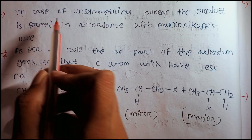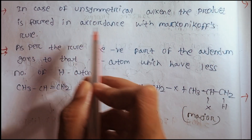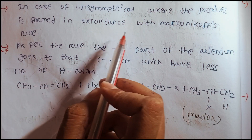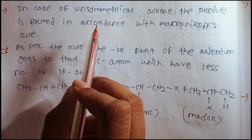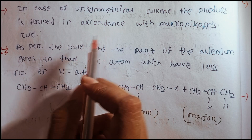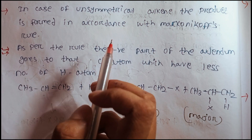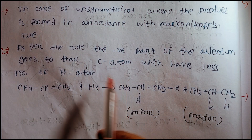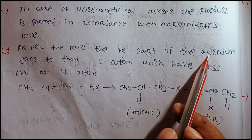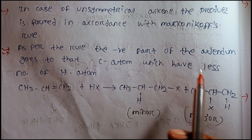In case of unsymmetrical alkyne, the product is formed in accordance with Markovnikov's rule. So if it is an unsymmetrical alkyne, then we react with H and Cl — we react with a promo code. We react with the hydrogen atom.